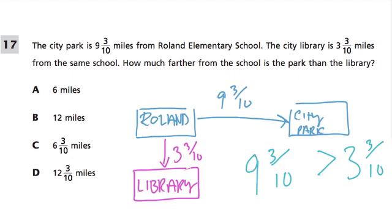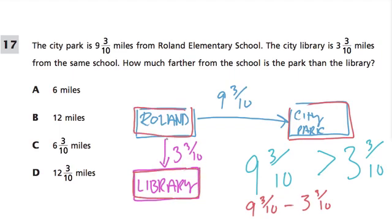What's nice about this problem is they're both in 9 and 3 tenths and 3 and 3 tenths. So when we're comparing how far this is, we want to subtract, right? 9 and 3 tenths minus 3 and 3 tenths. That'll tell us how much further the park is from the school, the 9 and 3 tenths, than the library, the 3 and 3 tenths, from the school actually is.